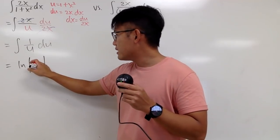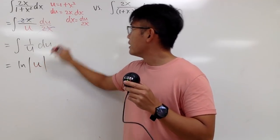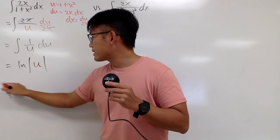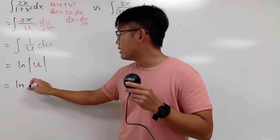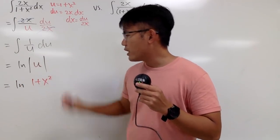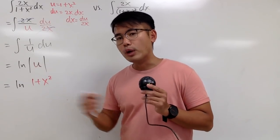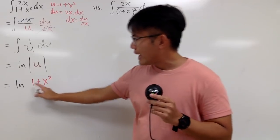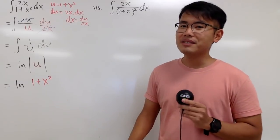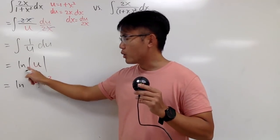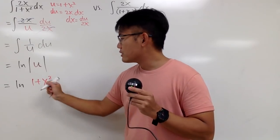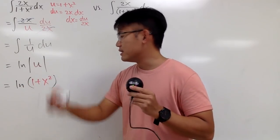But we're not done yet, because u is equal to 1 plus x squared. So I put down ln of 1 plus x squared. However, notice that x squared is always positive. And when you add 1 to it, it's still always positive. So technically, I don't need the absolute value. So right here, I will put down a parenthesis. Okay?